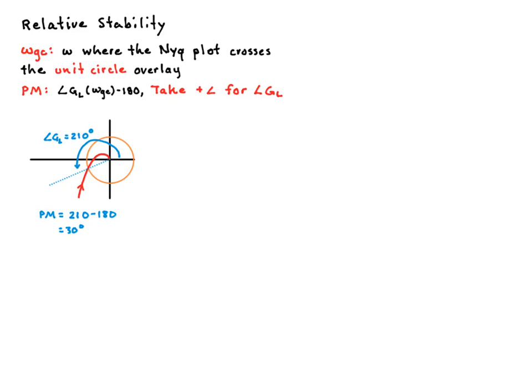So imagine that you increase the loop gain of your system and the Nyquist plot goes like that. That's the sort of thing increasing the loop gain does. It sort of distorts the Nyquist plot. Well now the intersection of the Nyquist plot with the unit circle is up there. So let's say about 150 degrees. And so you subtract 180 from that and now you have negative phase margin, which would be a bad thing in terms of stability.